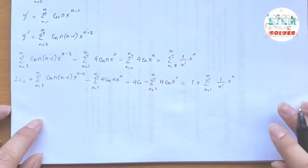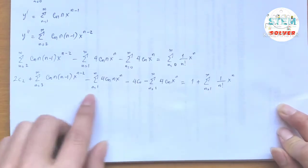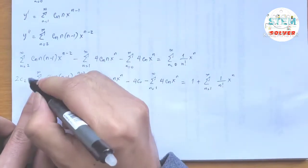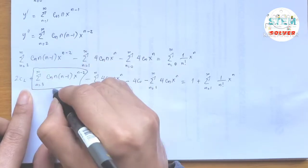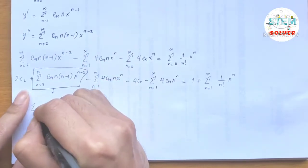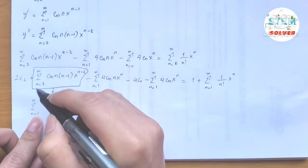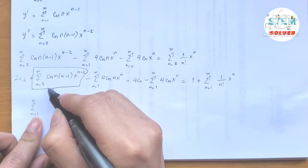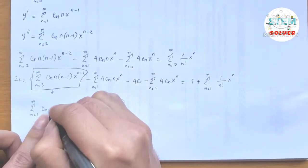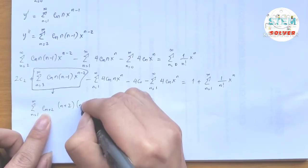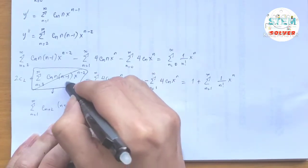We also run out terms for the right-side series because this is a non-homogeneous equation. At n=0: 1 over 0 factorial times x to the 0 equals 1, plus the power series from 1 to infinity of x to the n over n factorial. Now checking the indices: we have n=1, n=1, n=1, and n=3. So we index-shift the second-derivative series down to n=1, replacing n with n+2: c_{n+2} · (n+2) · (n+1) · x to the n.